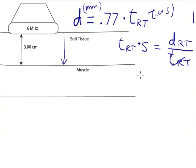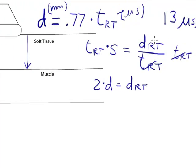I've got to realize that D, the round-trip distance, is twice the distance to the reflector. I can replace this round-trip distance with 2 times D. If I do that,